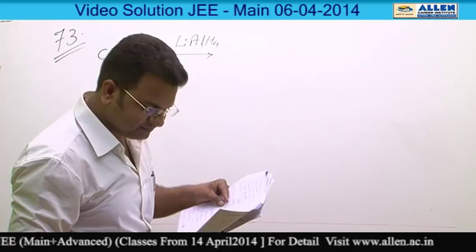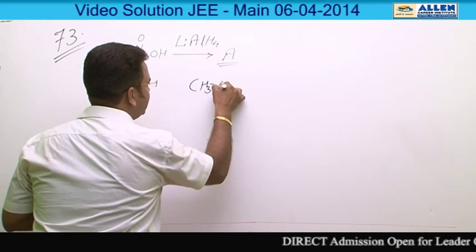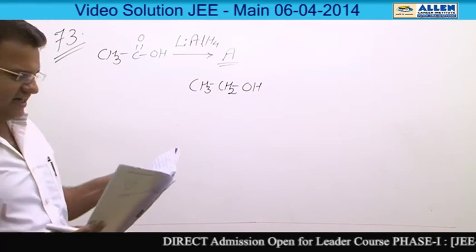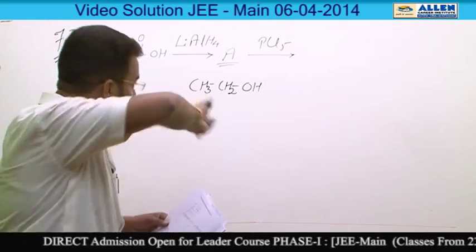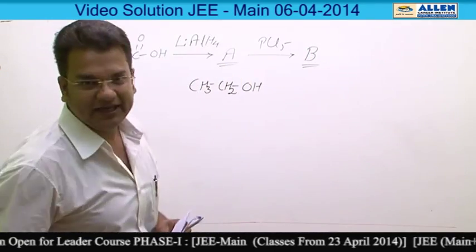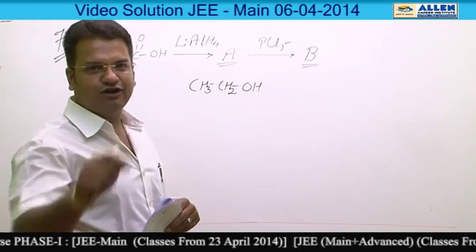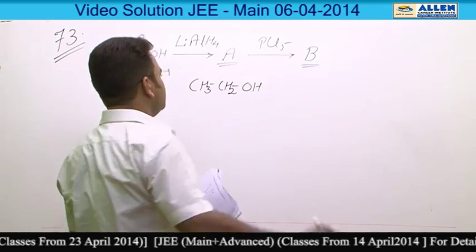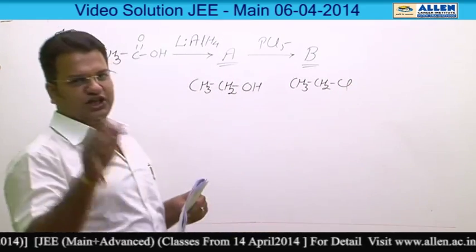So the product A which is asked here will be alcohol — it will be CH3CH2OH. The second reaction mentioned is PCl5, which converts A into B. PCl5 causes a substitution reaction and replaces the OH group by a halogen, so B will be CH3CH2Cl.